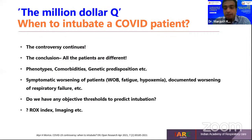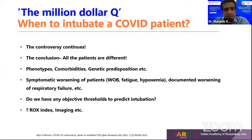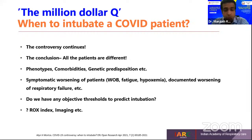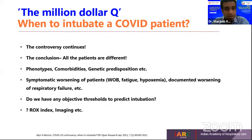One of the million-dollar questions we always discuss is when to intubate a COVID-19 patient. The controversy is still continuing. The conclusion is that all patients are different. We have heard about phenotypes — L and H phenotypes proposed by Gatinoni. Comorbid conditions, genetic predisposition — everything matters here.